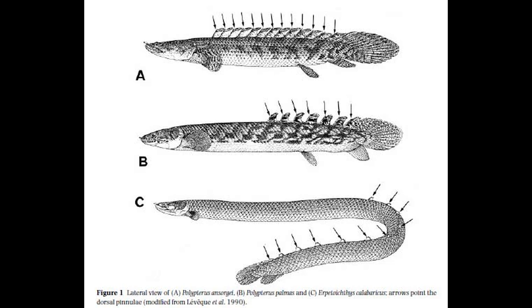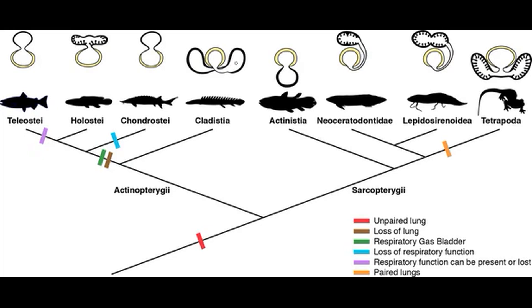Looking closer at the Polypteriformes, there are 13 species within the sole bichir genus Polypterus — meaning 'many fins,' referring to its numerous dorsal fins — and only one species of reedfish, Erpetoichthys calabaricus. All Polypteriformes are found in Africa today. They also have a peculiar feature not shared by any other ray-finned fish: they have lungs. We have noted that coelacanths and lungfish have lungs just like the tetrapods, but lungs are not unique to them — ray-finned fish have a similar structure called the swim bladder.